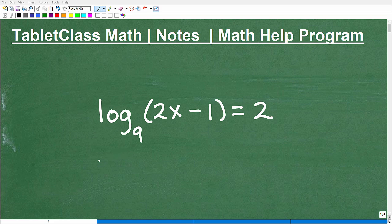Okay, let's go ahead and solve this logarithmic equation. So we have log base 9, 2x minus 1 is equal to 2.